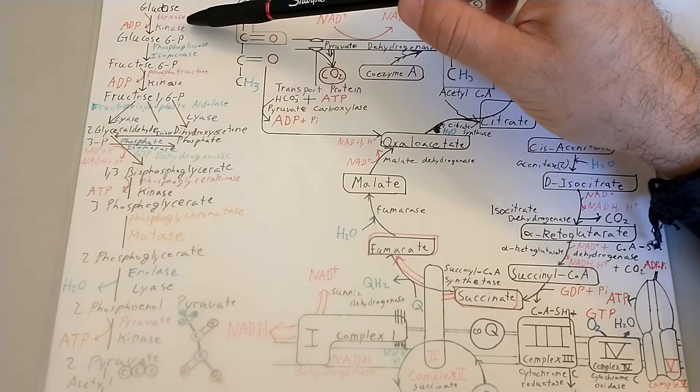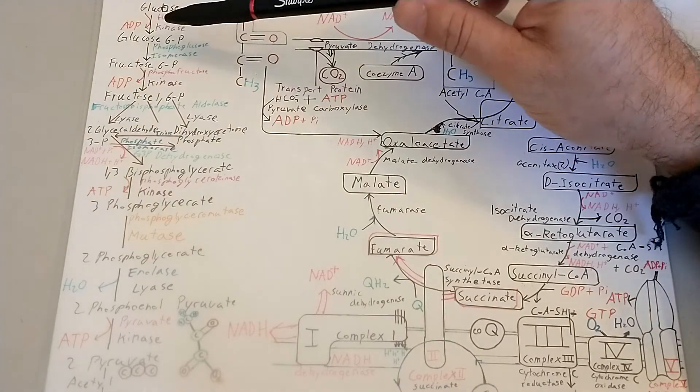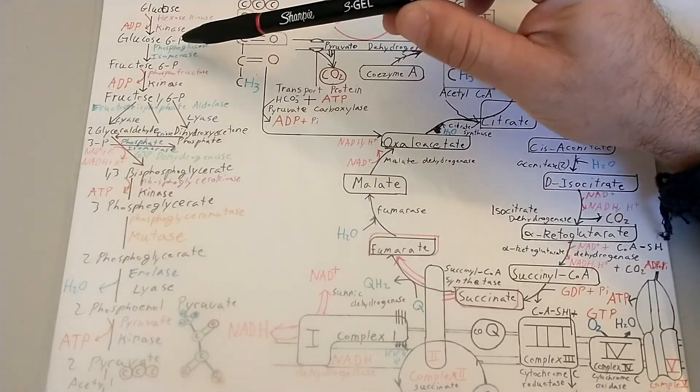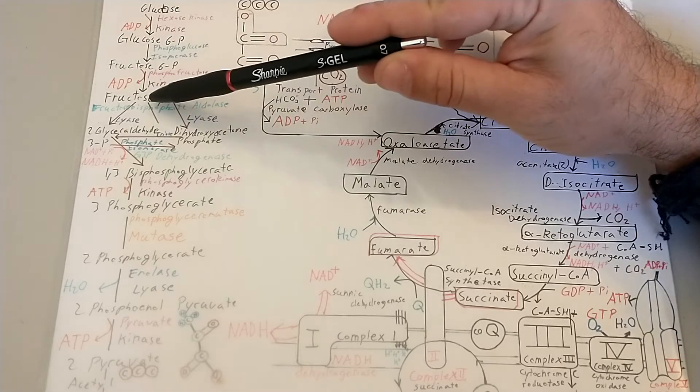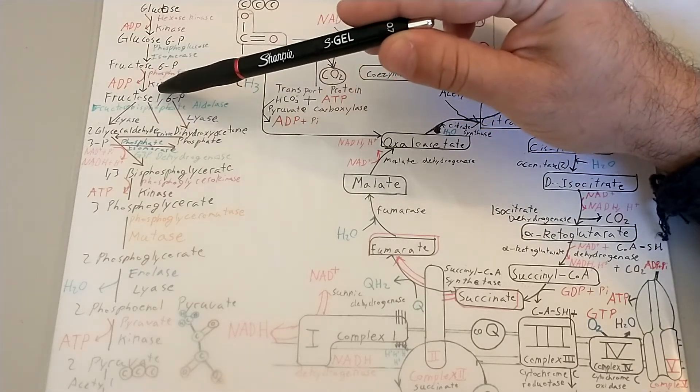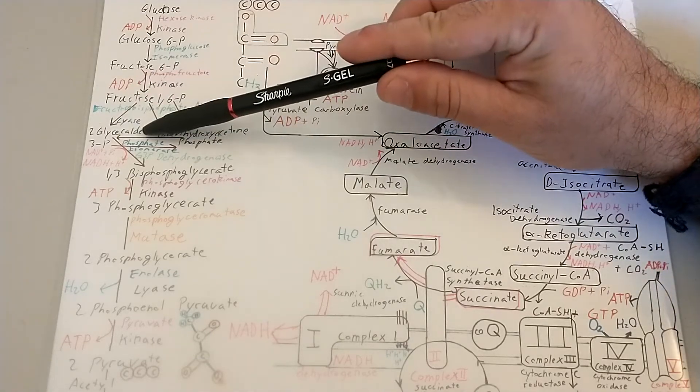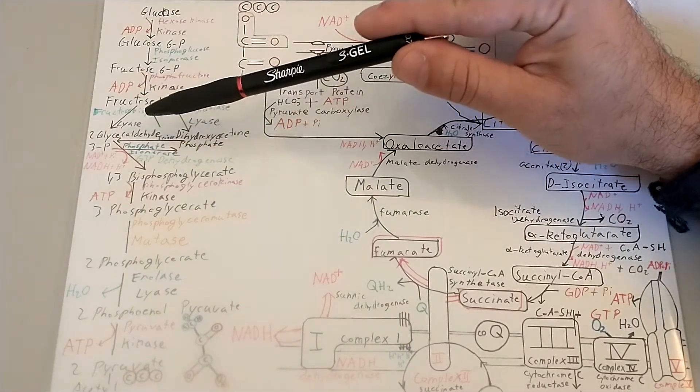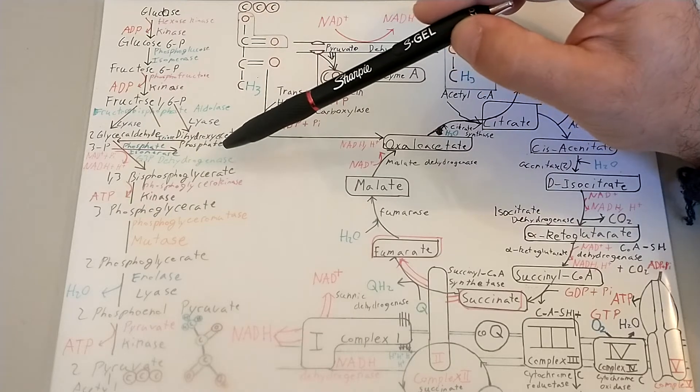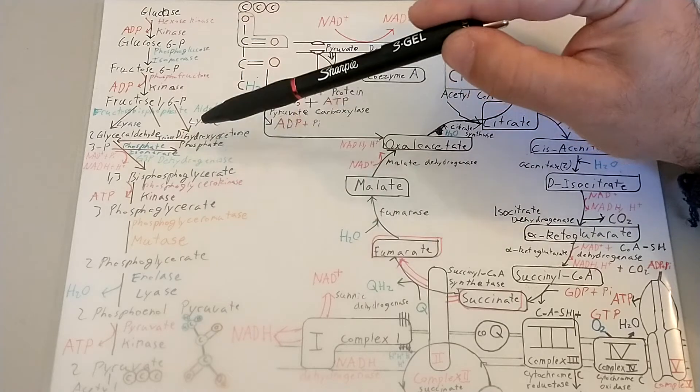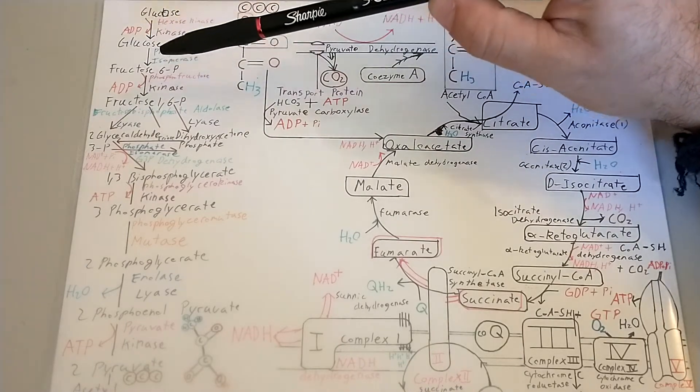You take glucose, and once it goes through the hexokinase enzyme, it becomes glucose-6-phosphate because it has taken up phosphate from the ATP energy. Glucose-6P passes another enzyme that turns into fructose. Fructose is then converted into fructose-1,6-bisphosphate, and here we have a triangle. All of these are a form of glucose. Fructose is a form of sugar.